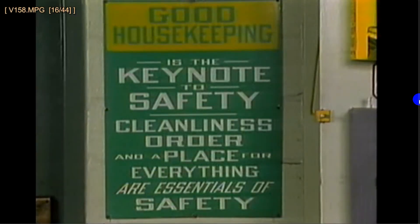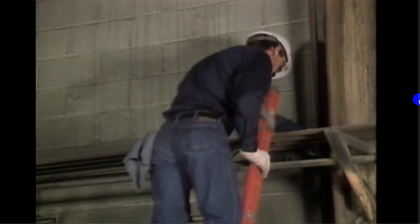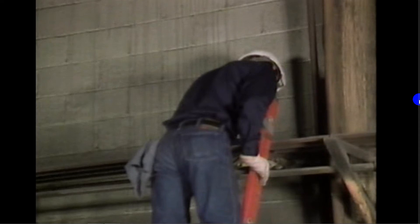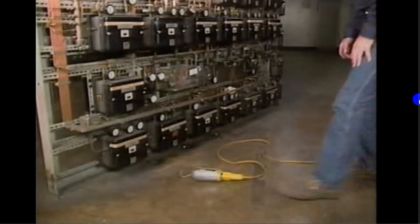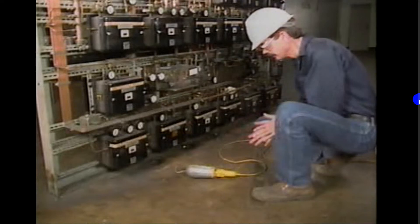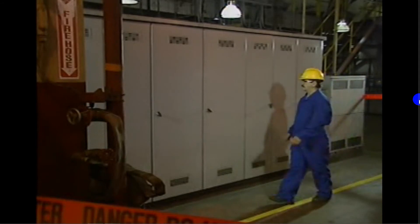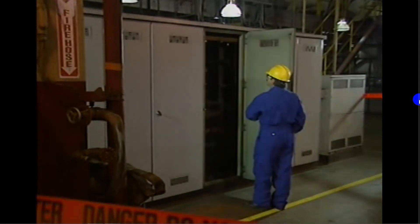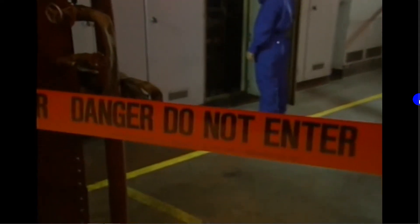You probably hear a lot of talk about safety, and you likely see warning signs all around your facility. One thing that you should never do is take safety for granted. Many people think that accidents can never happen to them, but carelessness and improper shortcuts are two big causes of industrial accidents and injuries. Safety is especially important when working around electricity — you can't see electricity, but if you don't take precautions, it can be deadly.